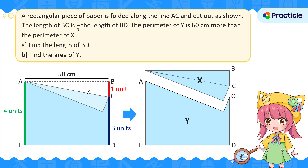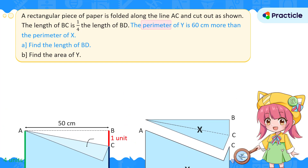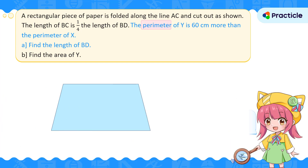Is everyone following so far? Then let's move on to the next clue. The perimeter of Y is 60 centimeters more than the perimeter of X. This is the key to the question. First, let's recall what perimeter means. When we talk about the perimeter of something, we are talking about the length of the thing when we add all its sides.